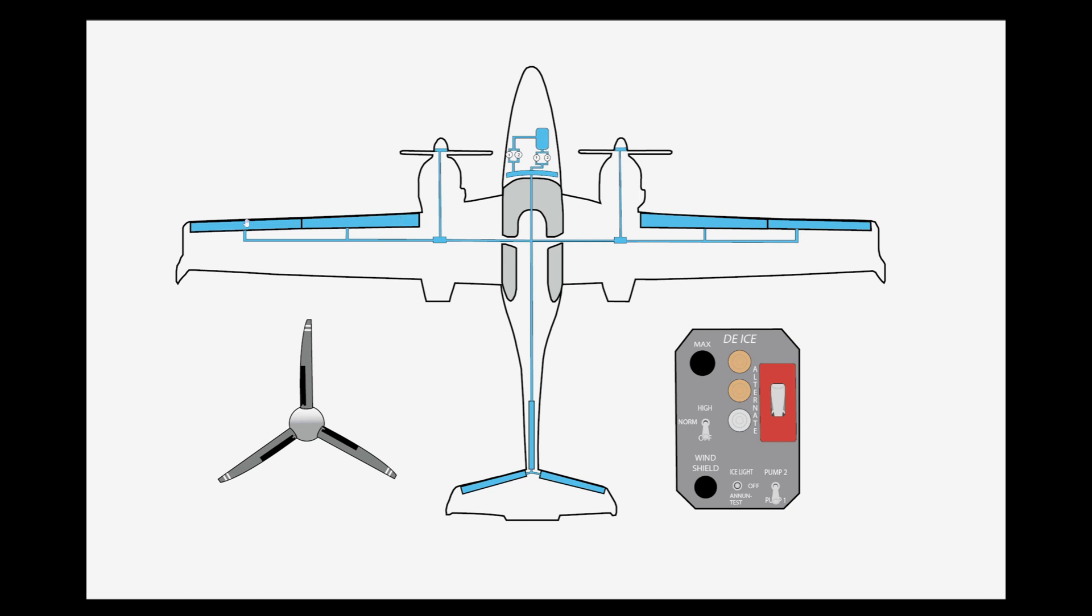That goes to the leading edge of the wings where there are metal panels with a bunch of tiny little holes drilled in them that secrete this glycol de-ice fluid. The same is true on the leading edge of the vertical stabilizer and horizontal stabilizers. Then there are also these slinger rings in the prop hubs. You can see right here that the prop has these small little tubes extending out of the prop hub. When the prop spins and the system is turned on, de-ice fluid is slung out of those tubes and up along the leading edge of the prop to de-ice the prop.